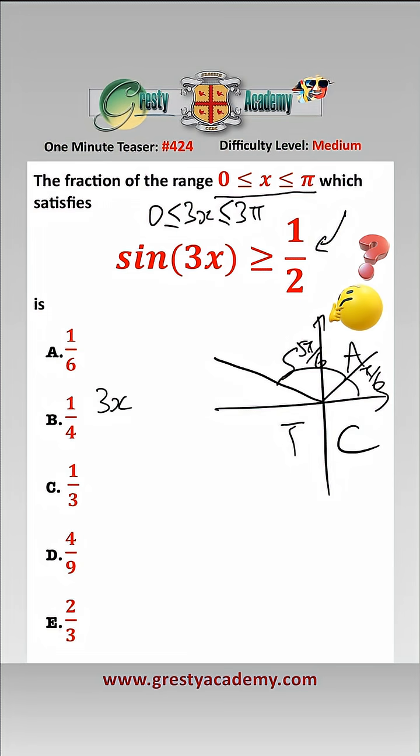we have that 3x must be greater than or equal to π/6 and 3x less than or equal to 5π/6. That's part of the range.